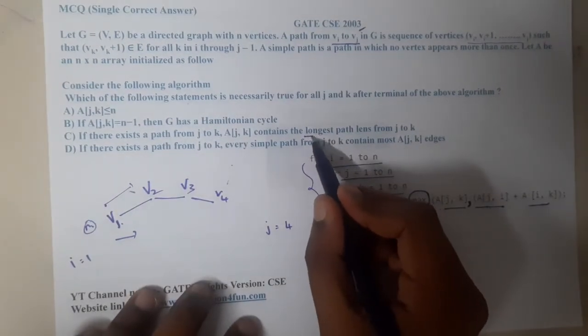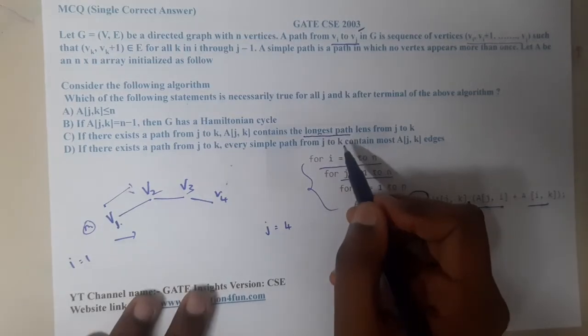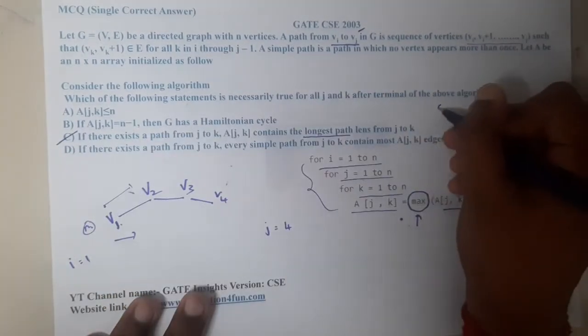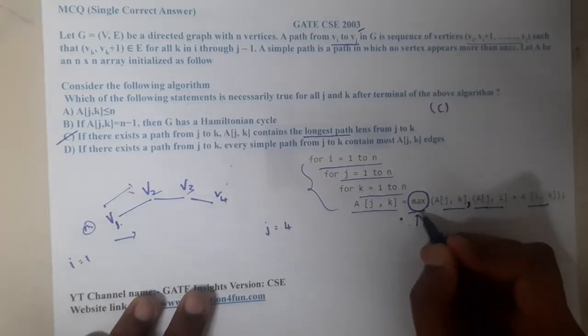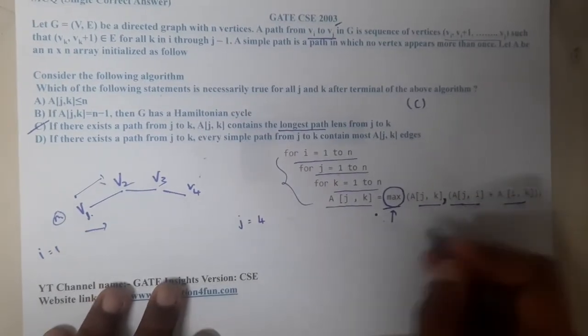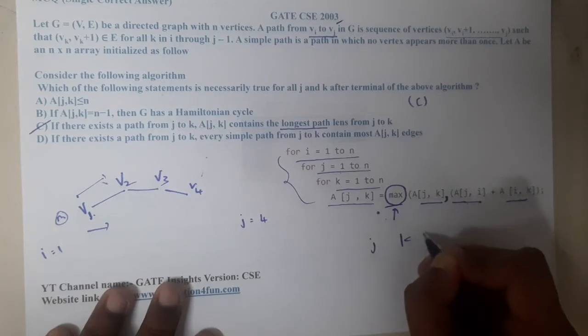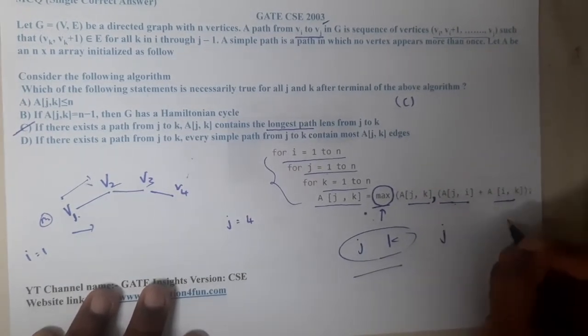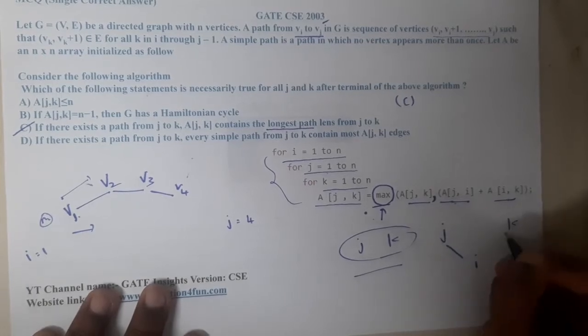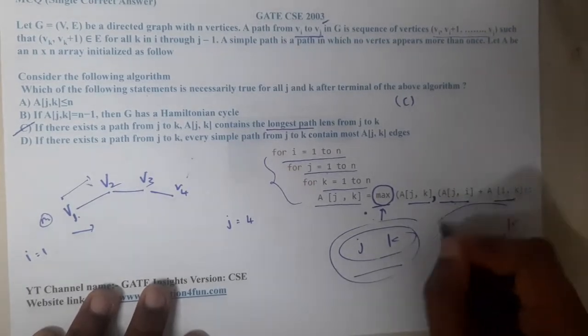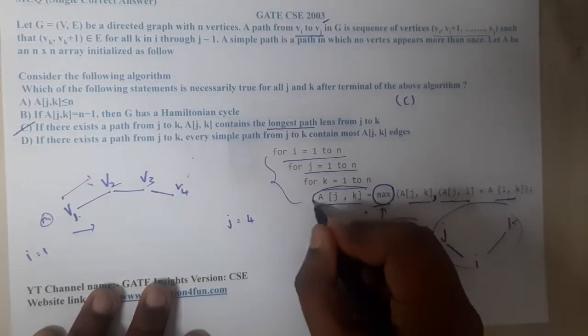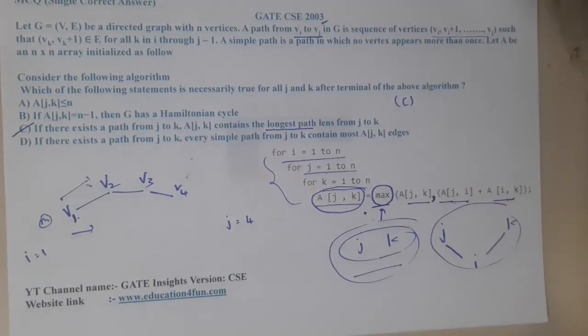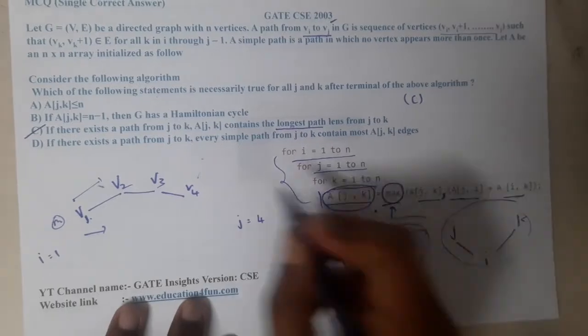With this observation, I can answer this question. In one of the options it clearly says it is working as a longest path. I can say that C is the correct answer because it is trying to find the maximum value. If there is a path j comma k, it is also going through j comma k with an intermediate node i. Among these two paths, the maximum value we are substituting in j comma k, so it is searching for the longest paths.